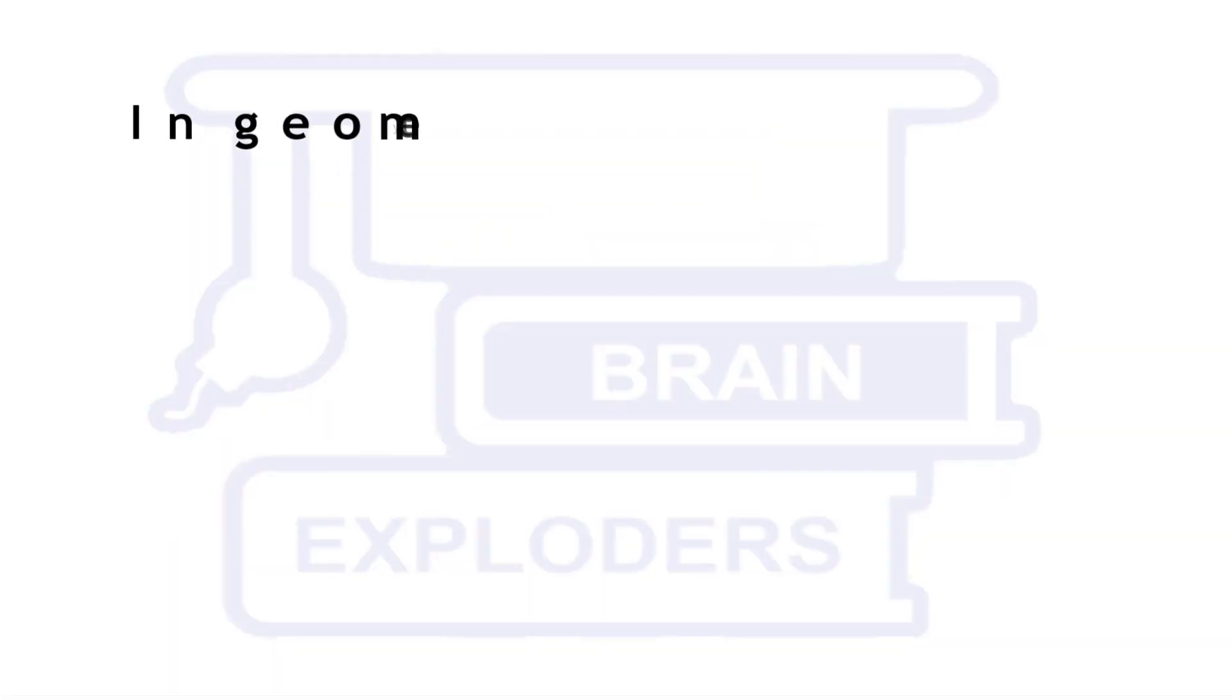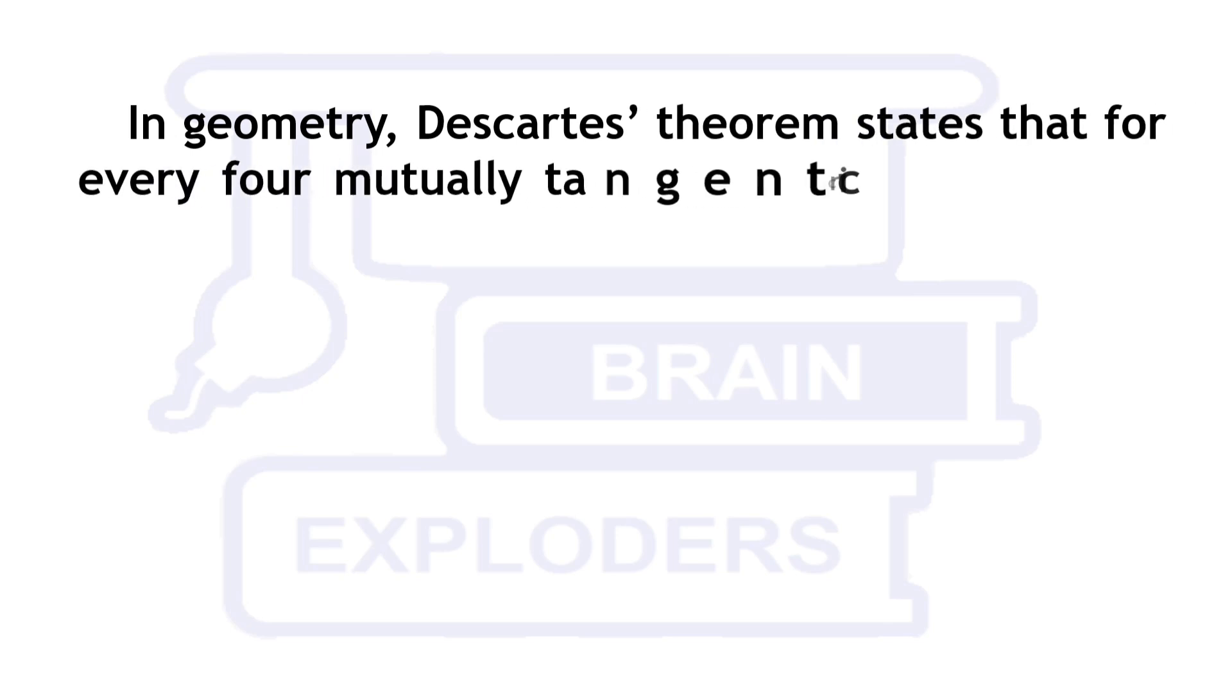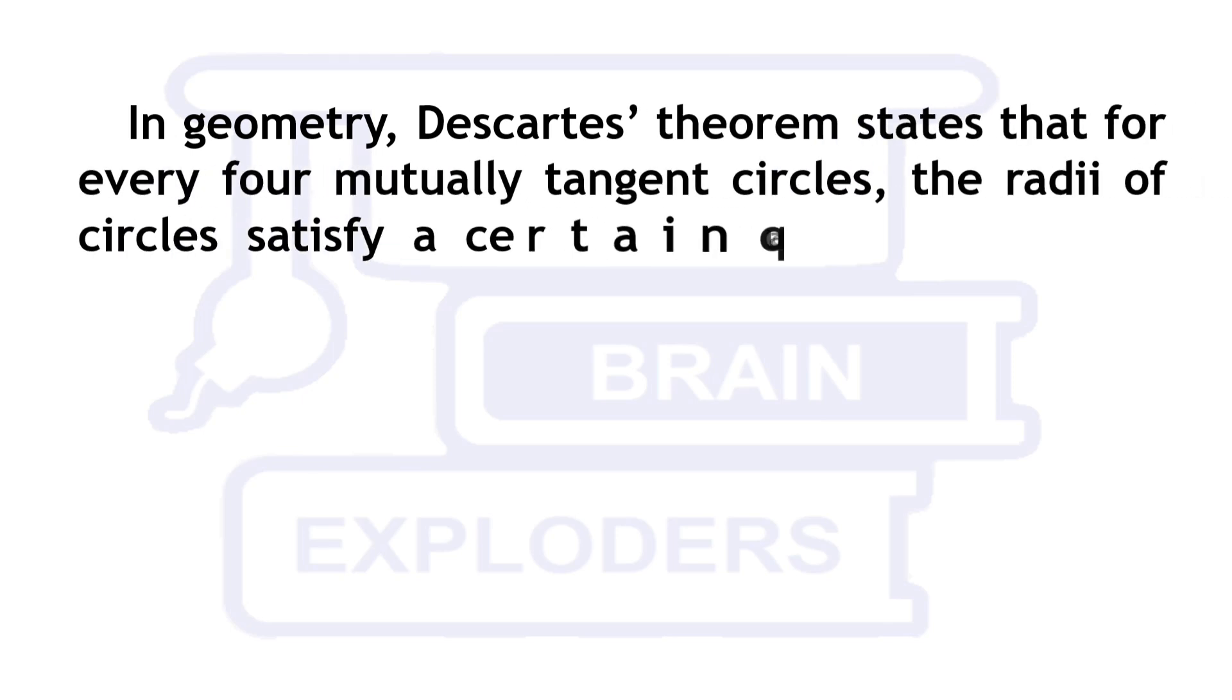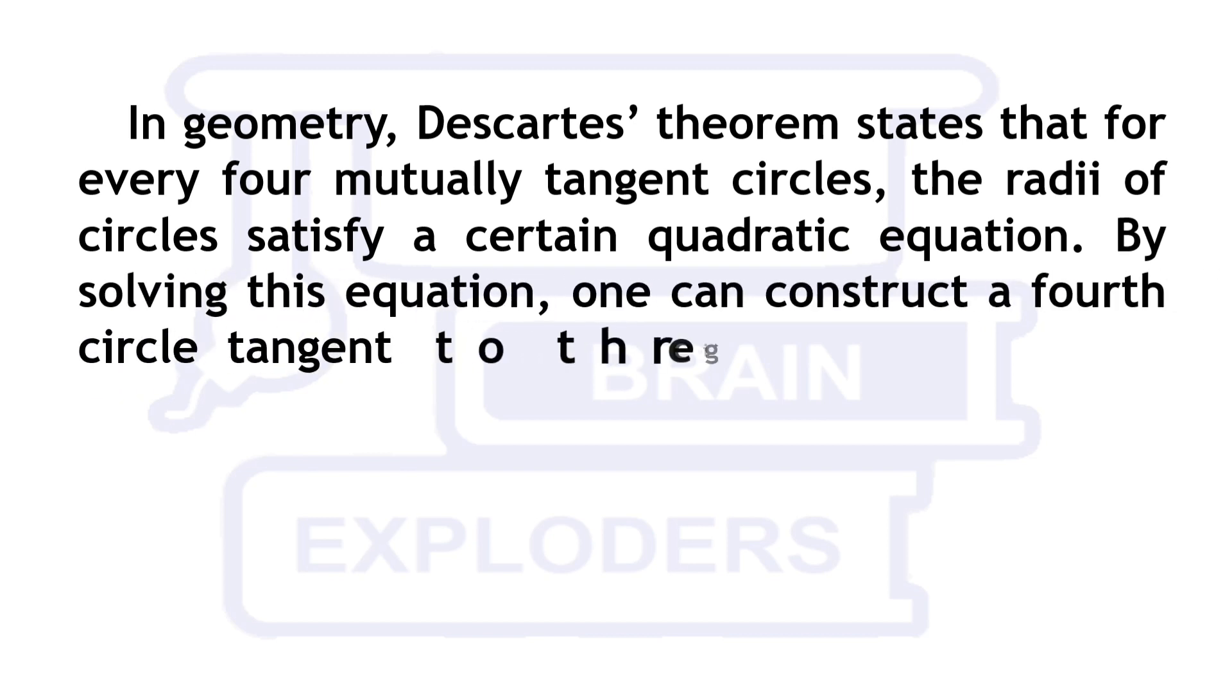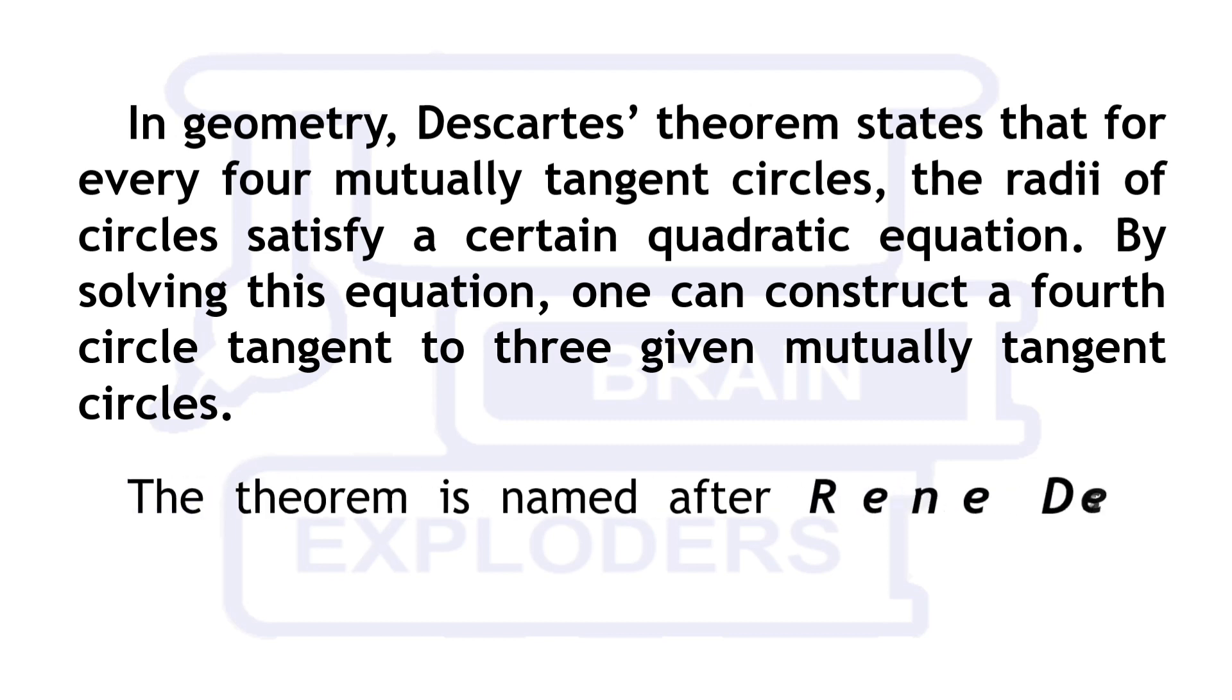In geometry, Descartes' theorem states that for every four mutually tangent circles, the radii of circles satisfy a certain quadratic equation. By solving this equation, one can construct a fourth circle tangent to three given mutually tangent circles. The theorem is named after René Descartes who stated it in 1643.